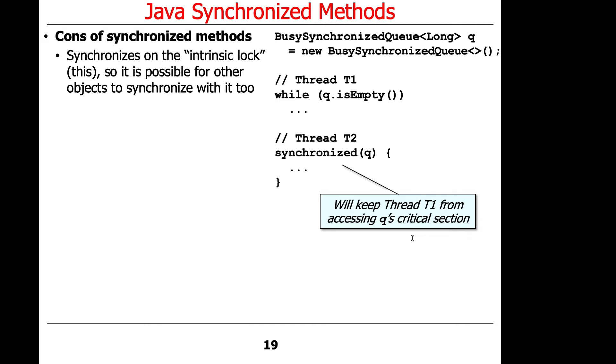So let's assume for sake of argument we have a busy synchronized queue called queue, and we have thread T1, and this is saying, you know, while queue is empty, do something or other. And over here in thread T2, it's synchronizing on queue. It's calling synchronized on the queue object. Well,